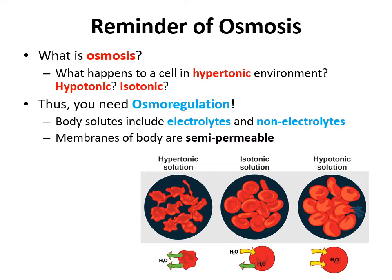A lot of osmoregulation depends on membranes, because water and solutes move back and forth across them. The membranes of your body are semi-permeable, meaning they allow movement only to certain types of solutes and water — not everything can cross. Semi-permeable means they only partially allow certain molecules to travel across them.